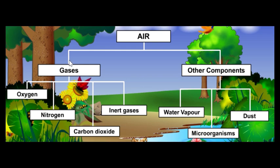Besides gases, there are also other components in air: water vapor, microorganisms, and dust. The quantity of water vapor, dust, and microorganisms in the air is very low and varies with respect to the time and location.